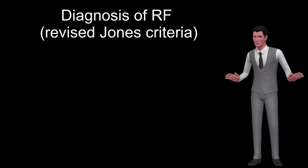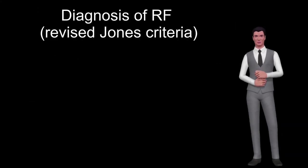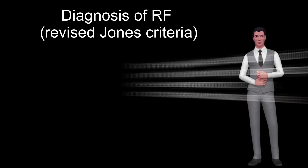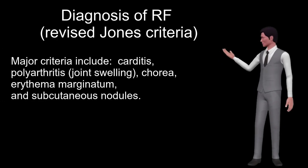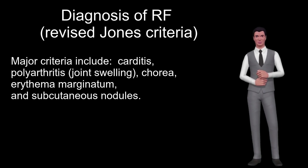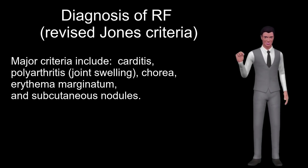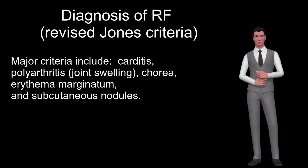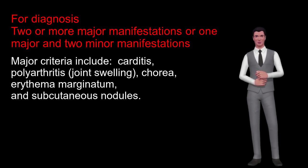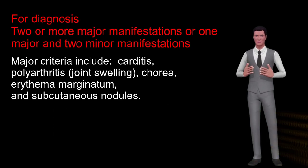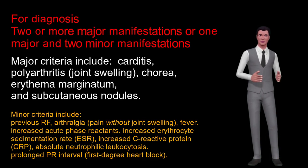Diagnosis of RF uses the revised Jones criteria: two or more major manifestations, or one major and two minor manifestations. Major criteria include carditis, polyarthritis (joint swelling), chorea, erythema marginatum, and subcutaneous nodules.